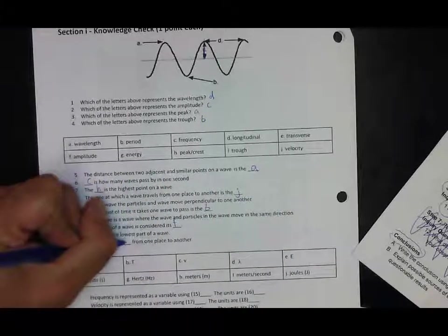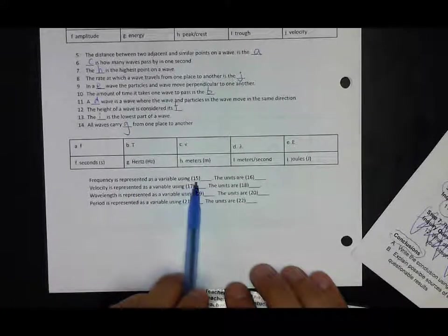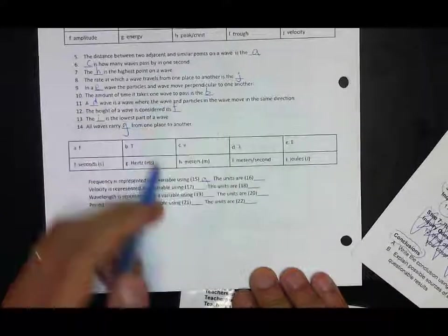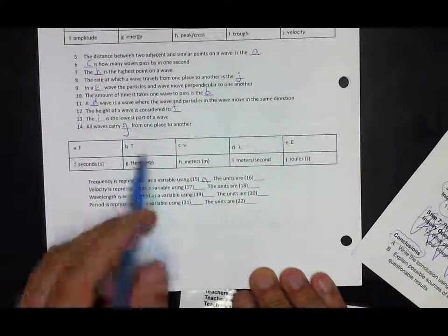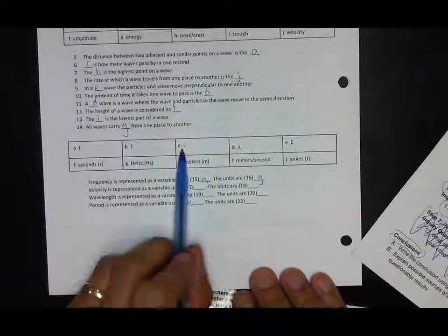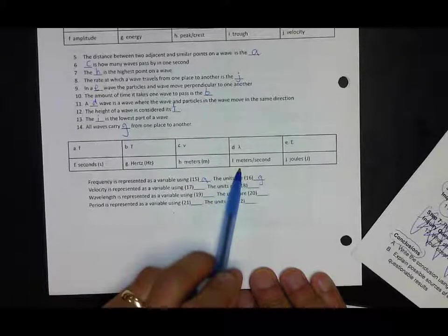Frequency is represented using the variable F, and the units are hertz. Velocity is represented as a variable V, and the units we use for velocity are meters per second.